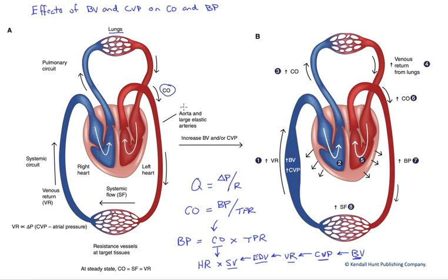Now, note that at steady state, the amount of blood coming out of the heart, our cardiac output, is going to equal the amount of blood going through our systemic tissues, that systemic flow, as well as being equal to the amount of blood coming back to the heart, our venous return.